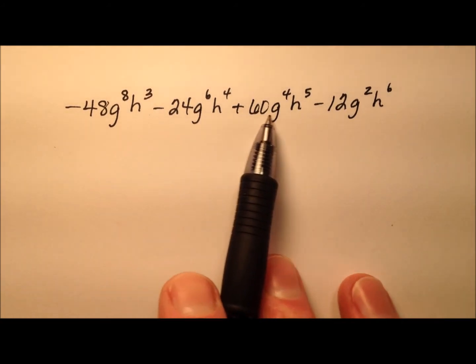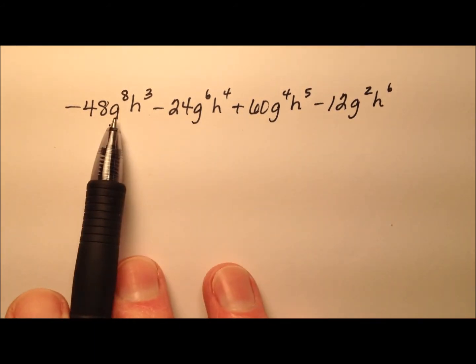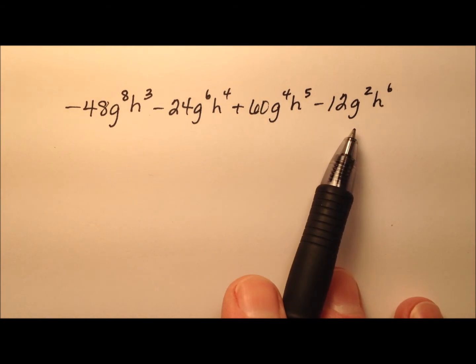In this example, we're going to factor this algebraic expression by factoring out the greatest common factor. Let's find out what that is and then factor it out.